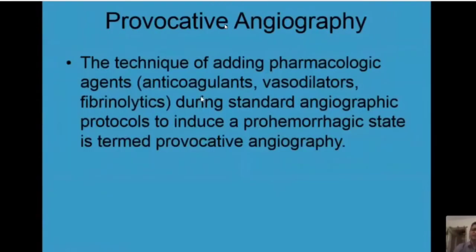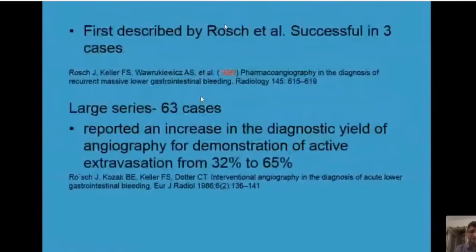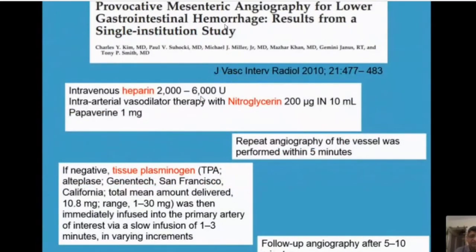Sometimes we will fail to demonstrate bleed even on a catheter angiogram, but we know the patient has intermittent bleed with documented fall in hemoglobin. For these patients we do provocative angiography — a technique where you give pharmacological agents to provoke bleeding. But whenever we do this procedure, we need to be absolutely ready with our material to embolize, because sometimes these patients can have torrential bleed. This procedure was first described by Rösch et al in 1982, followed by a larger study of 63 cases in 1986, and in 2010 an even larger study discussed the advantages of provocative mesenteric angiography.